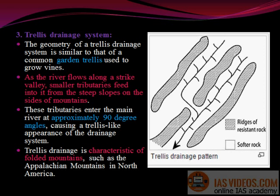Trellis drainage system: The geometry of a trellis drainage system is similar to that of a common garden trellis used to grow vines. As the river flows along a strike valley, smaller tributaries feed into it from the steep slopes on the sides of mountains. These tributaries enter the main river at approximately 90-degree angles, causing a trellis-like appearance. Trellis drainage is characteristic of folded mountains, such as the Appalachian Mountains in North America.